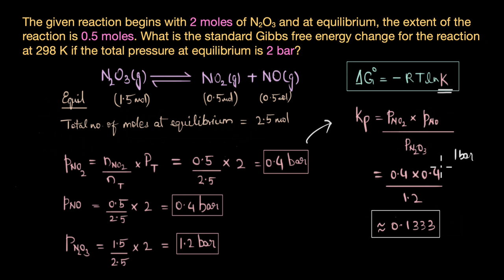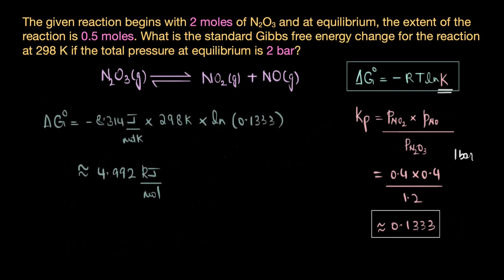This is a standard practice used to avoid mathematical inconsistencies when dealing with logarithmic functions. Now that it is sorted, we substitute the dimensionless Kp value into the equation delta G° = -RT ln K. When we do that, we get the final value of delta G° as approximately 4.992 kJ/mol. This is the standard Gibbs free energy change for the given reaction under the stated conditions.